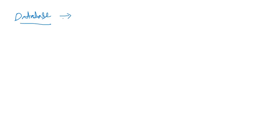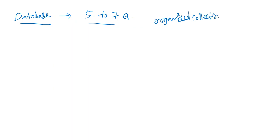So, database concepts. We are going to discuss the general database concepts — how data is related to data-related concepts. An organized collection of logically related data is called a database.